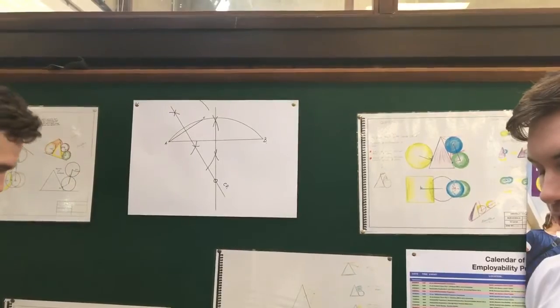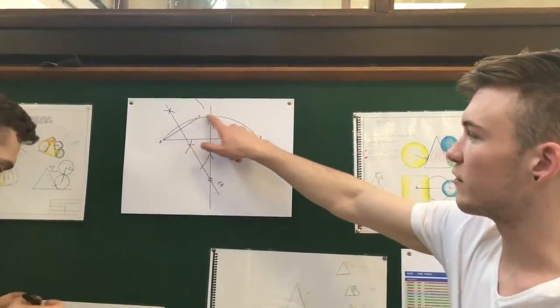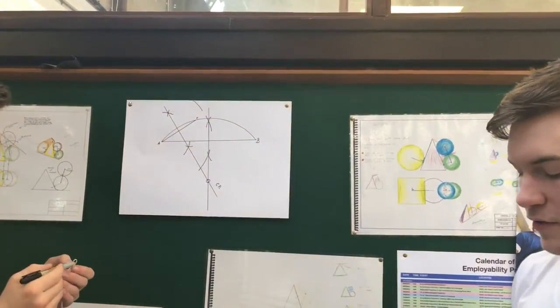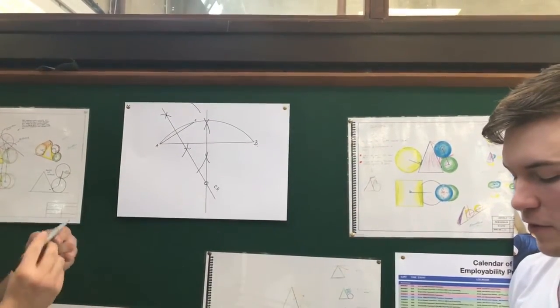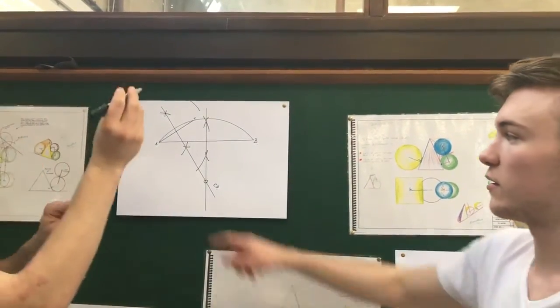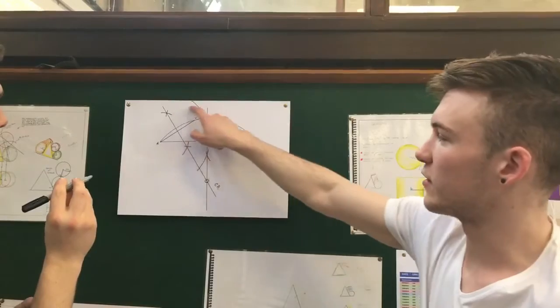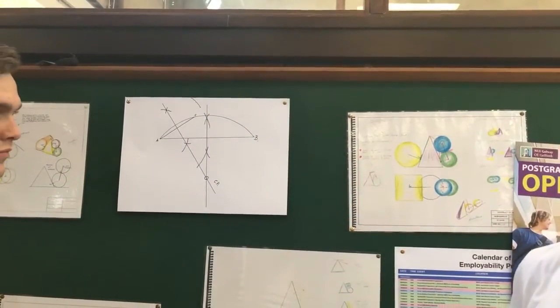Then our last step is to draw a curve parallel to our given curve, which is this curve here. So to do this, we simply put our compass on our center point and draw a curve internal or external to our given curve, and hopefully they should be parallel.